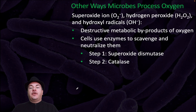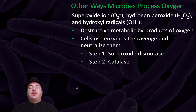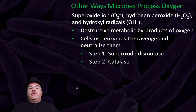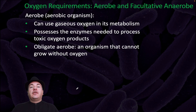We also have superoxide ion, hydrogen peroxide, and hydroxyl radicals — these are destructive metabolic byproducts of oxygen. Cells use enzymes to scavenge and neutralize them, specifically superoxide dismutase and catalase, to get rid of these harmful products.